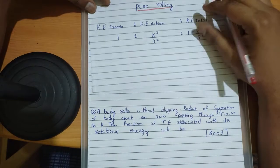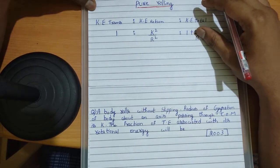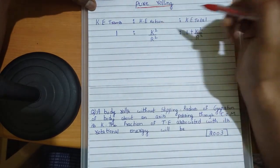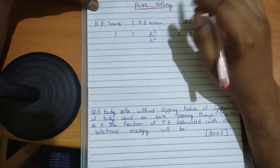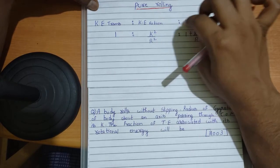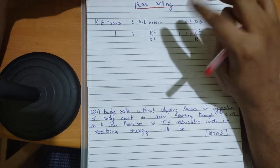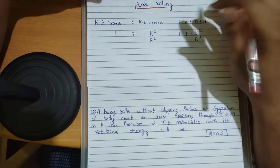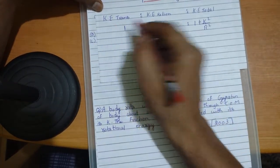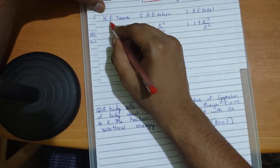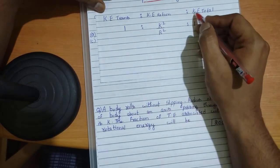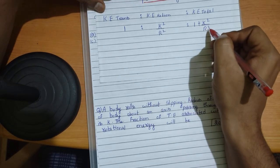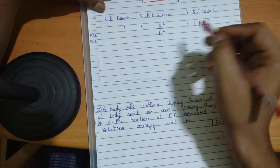If you observe previous year questions, there's a very important model from rotational dynamics where they ask you to calculate the ratios between translational kinetic energy, rotational kinetic energy, or total kinetic energy. They interchange the terms or ask any one with respect to the others. The trick is: translational KE to rotational KE to total KE has the ratio 1 : k²/r² : 1 + k²/r².